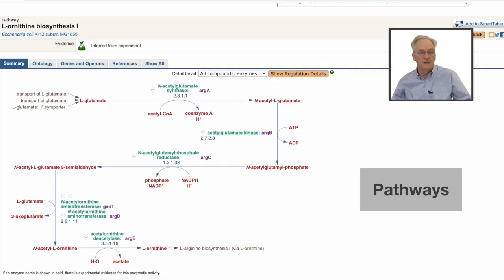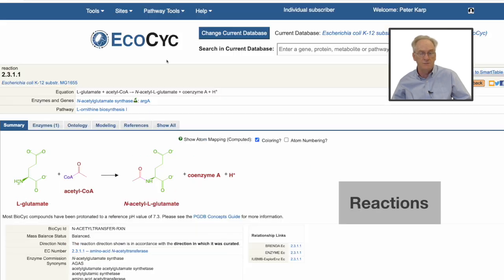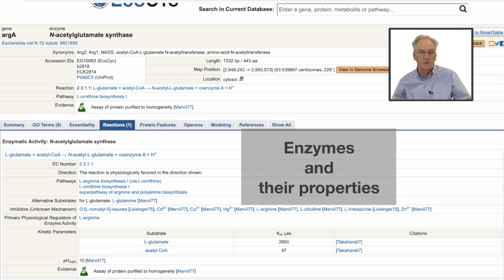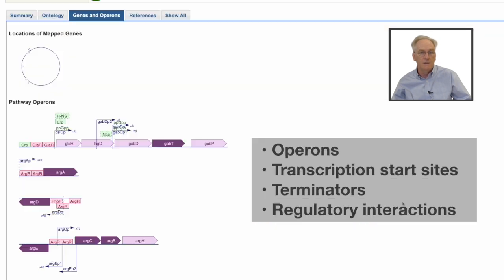The data include metabolic pathways, reactions, metabolites, and enzymes and their properties. It also includes operons, transcription start sites, terminators, and regulatory interactions.